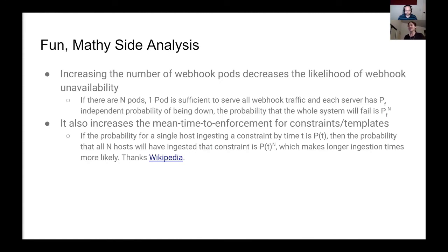And that's how we implement a web troller — all the way from scaling webhook pods horizontally to managing how they report status. Let's take a look at how reliability and performance of the system may scale with the number of pods. If we assume one serving pod is sufficient to serve all inbound traffic and that each pod fails independently, the probability of downtime decreases exponentially with the number of running pods. On the other hand, because we only consider a constraint as being enforced when all pods have observed it, we lengthen the mean time to enforcement as reported by the system as a whole. Without knowing the exact distribution of ingestion times, it's hard to say by how much.